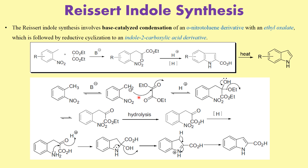Coming back to the mechanism, the carbanion is generated and attacks the ethyl oxalate. This results in the formation of an intermediate species. Once the ethoxide leaves, you get the formation of this particular stable species. Then there is hydrolysis — we are considering that zinc in acetic acid is being used — and after hydrolysis of that intermediate, what you end up getting is this particular acid.